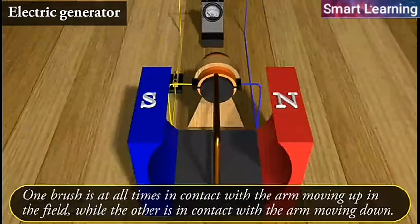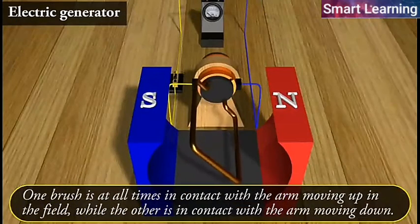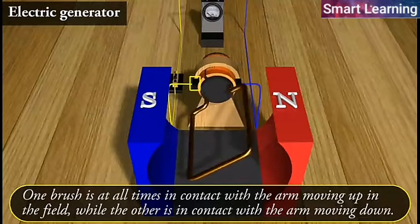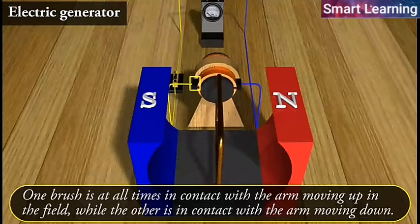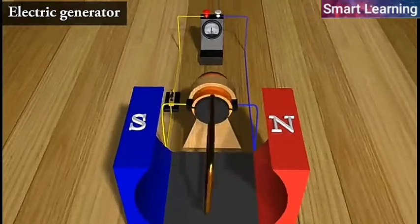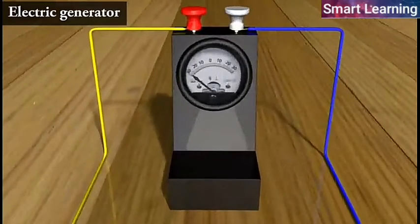With this arrangement, one brush is at all times in contact with the arm moving up in the field, while the other is in contact with the arm moving down. We have seen the working of a split ring commutator in the case of an electric motor.